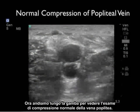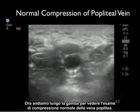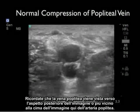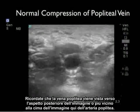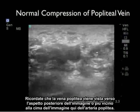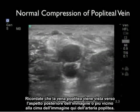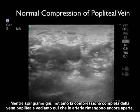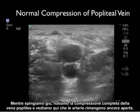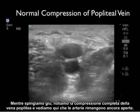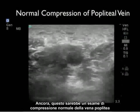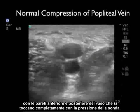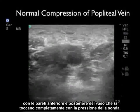Now let's move down the leg to look at the normal compression exam of the popliteal vein. Recall that the popliteal vein is going to be seen towards the posterior aspect of the image, or closer to the top of the image, than the popliteal artery. As we press down, we see complete compression of the popliteal vein while the artery stays open — a normal compression exam of the popliteal vein with the anterior and posterior walls completely touching down with probe pressure.